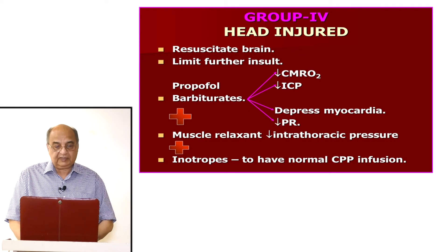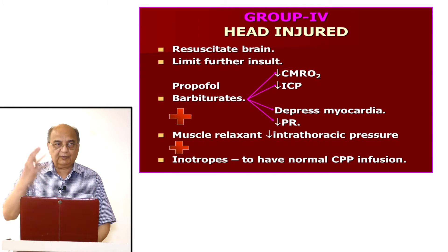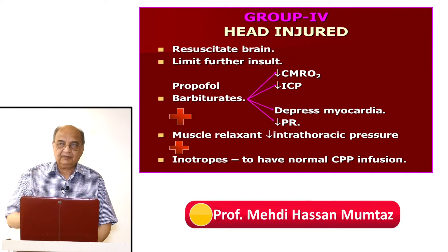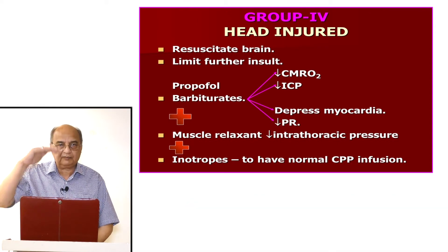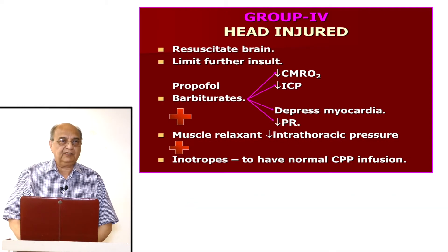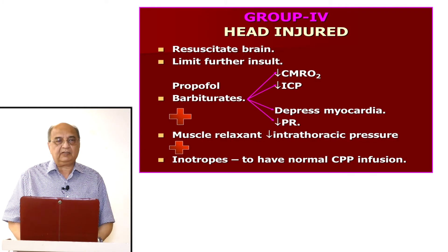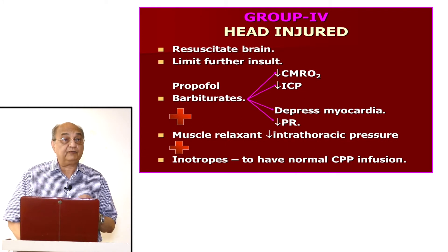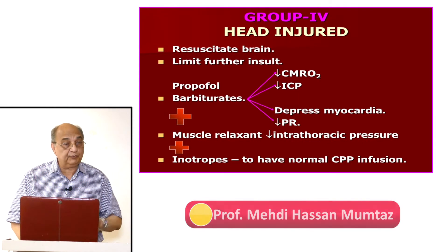If the head-injured patient is on the ventilator, the best approach is to give muscle relaxants, which lower intrathoracic pressure, increase venous drainage from the upper body and brain, and thereby lower intracranial pressure — keeping the patient relaxed. If required, inotropes can be added to maintain adequate cerebral perfusion pressure.